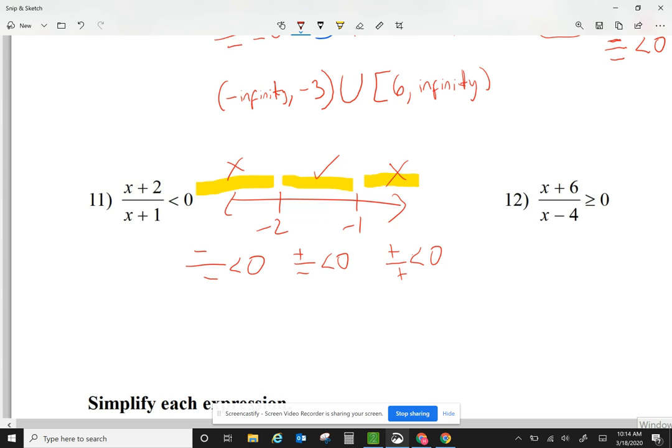So the section I'm going to have is from negative 2 to negative 1. Once again, the number that makes the bottom equal to 0, I have parentheses. The number that makes the top equal to 0 have either parentheses or a bracket. Parentheses if my inequality does not have the or equal to part. Bracket if the inequality has the or equal to part.